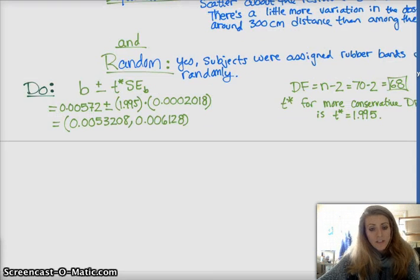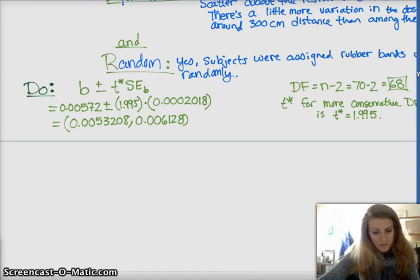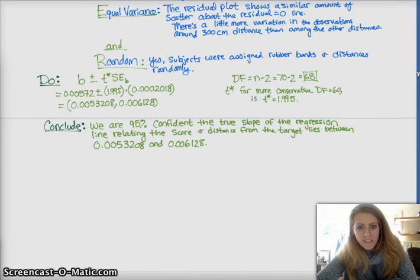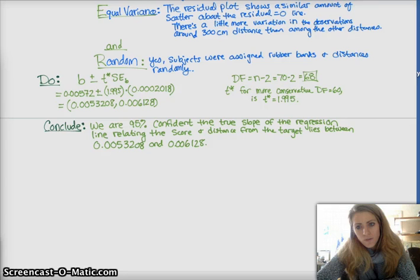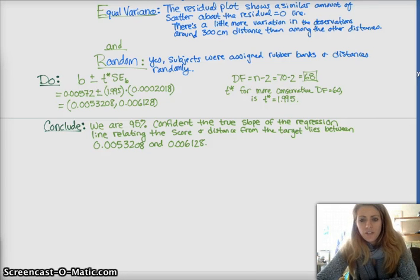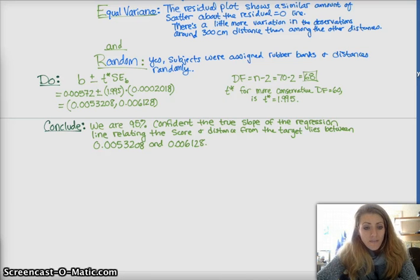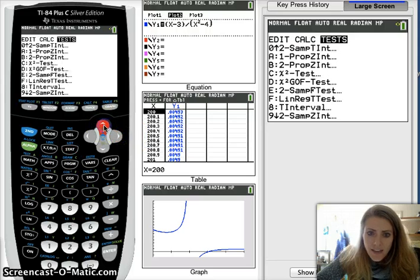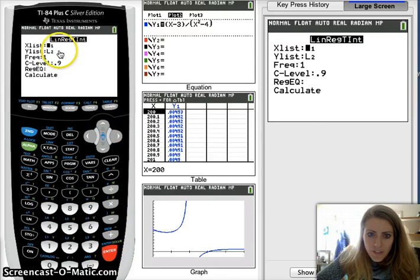This is our confidence interval, and then we want to conclude in context. Remember, you are estimating beta, which is the true slope of the least squares regression line. So, you conclude something like this. We're 95% confident the true slope of the regression line relating the score and distance from target lies between blank and blank. Now, if you have the actual data, the raw data, and you put it in list 1 and list 2, you can do the confidence interval in your calculator. Go to stat, tests, and then there's the Lin-Reg T-interval.